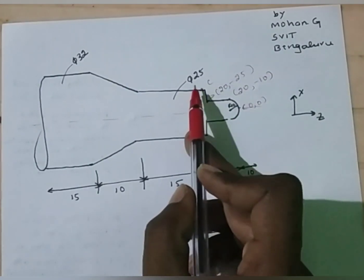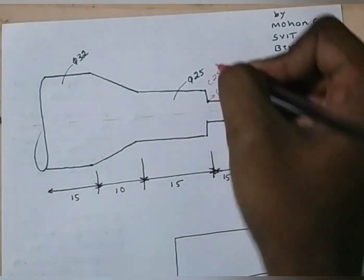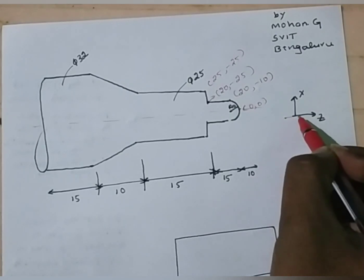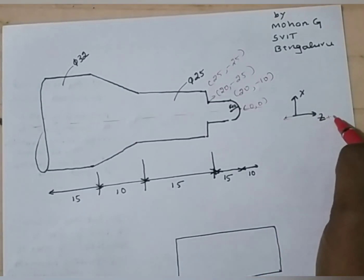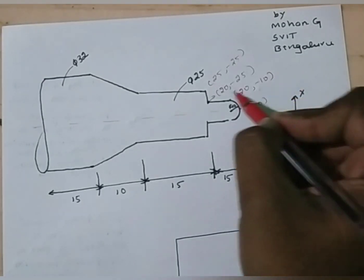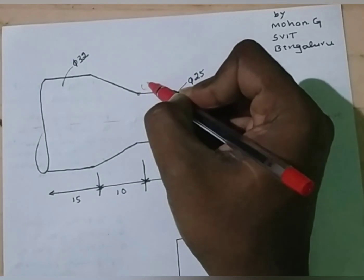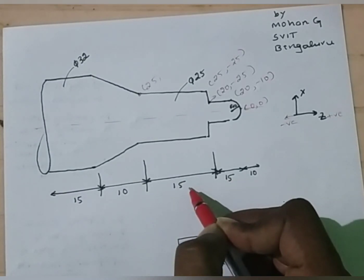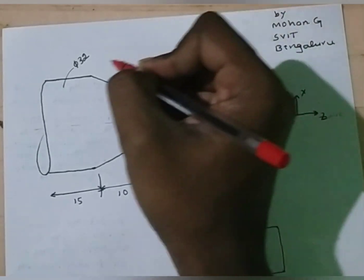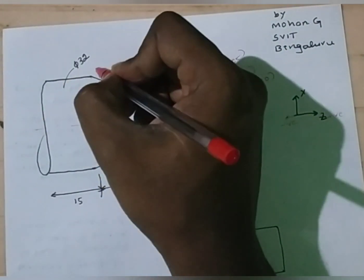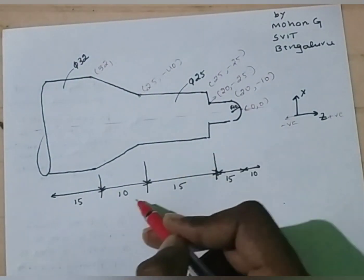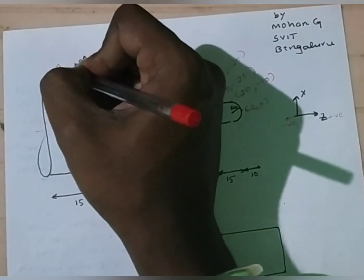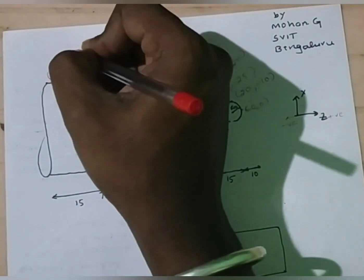At this point, the diameter is given, that is 25. The length value is again 10 plus 15, minus 25. We have to take the Z value in negative because you can see the sign convention here. Towards the right, positive Z; towards the left, we have to take a negative Z. Again, at this point, the diameter is 25. Therefore, X value is 25. The length value from the reference is 10 plus 15 plus 15, that is 40, minus 40 mm. Again, at this point, the diameter is 32 and the Z value is 40 plus 10, that is minus 50 mm. At the last point, the diameter is 32 and the length value is 50 plus 15, minus 65 mm.